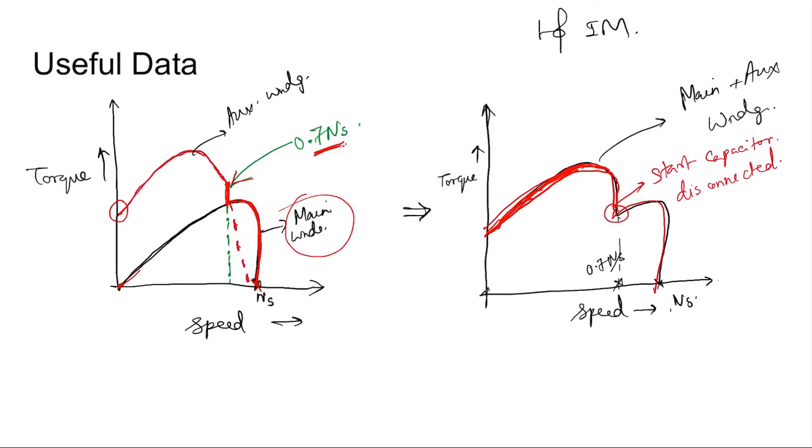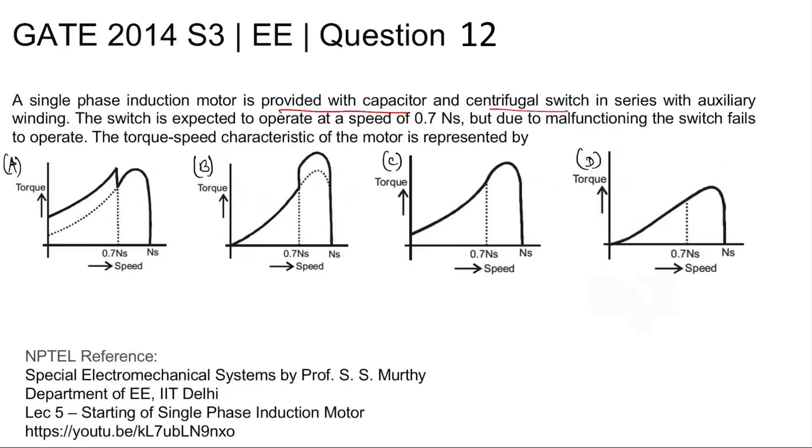However, if the auxiliary winding with the starting capacitor is not disconnected, then this type of notch will not happen. When the auxiliary winding will remain connected, the starting torque cannot be 0. So, the curve will be smooth without any notch.